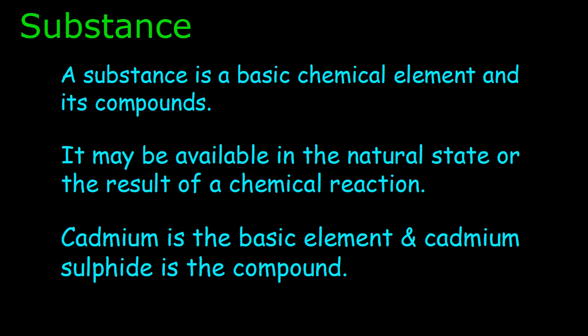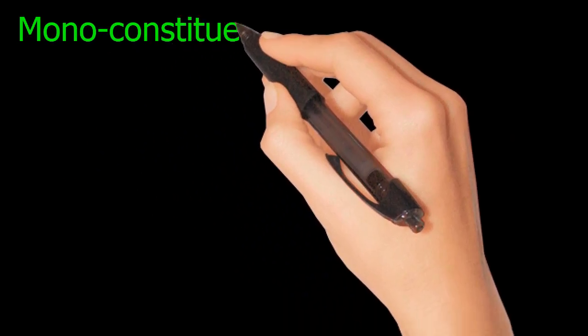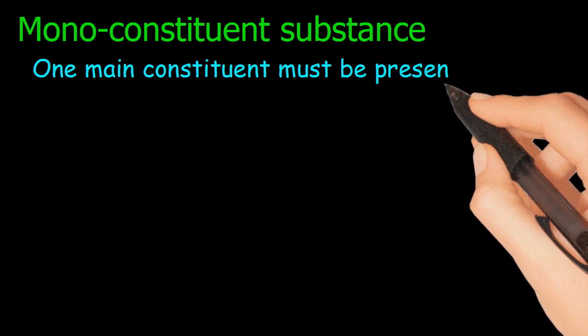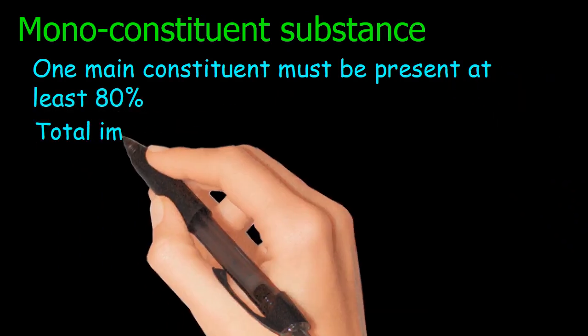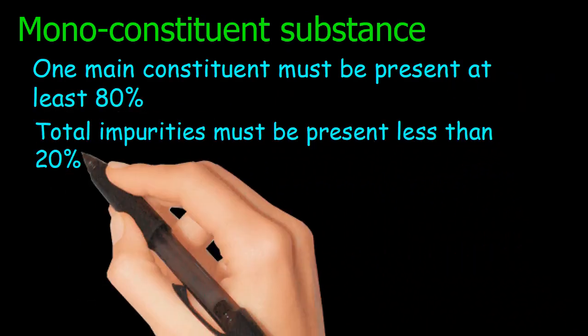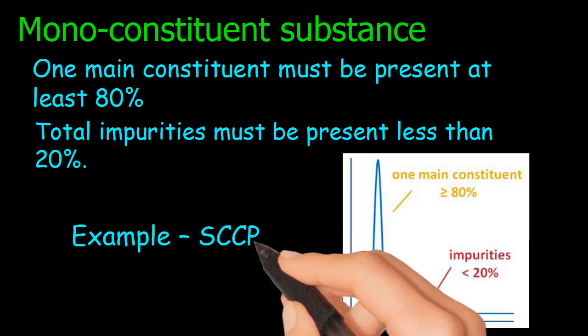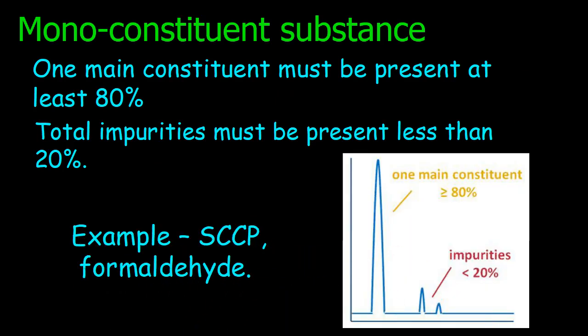Substances have been divided into three categories. Mono-constituent substance: one main constituent must be present at least 80%, total impurities must be present less than 20%. Examples: SCCP, formaldehyde.